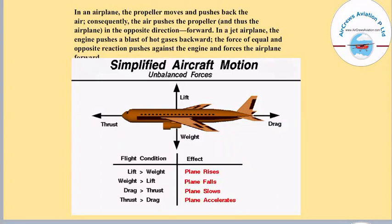What if there are various flight conditions? If lift is greater than weight, then the plane rises. If weight is greater, the plane falls. If thrust is greater than drag, then the plane accelerates. These are basically the unbalanced forces — when one force is greater than the other, it affects the motion of the aircraft.